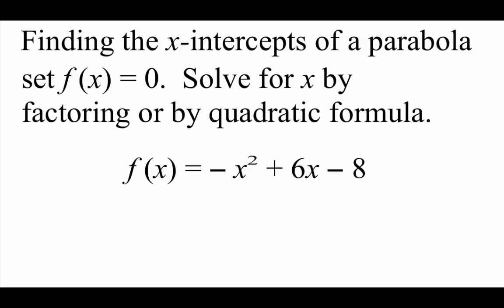We've already done quite a bit with finding x-intercepts or finding zeros of a function this year. Remember, in order to find x-intercepts, we just take this f of x on the left-hand side, replace it with a zero, and then we solve. Since these are quadratic, we have a couple of options: we can either try to factor them or we can run the quadratic formula.